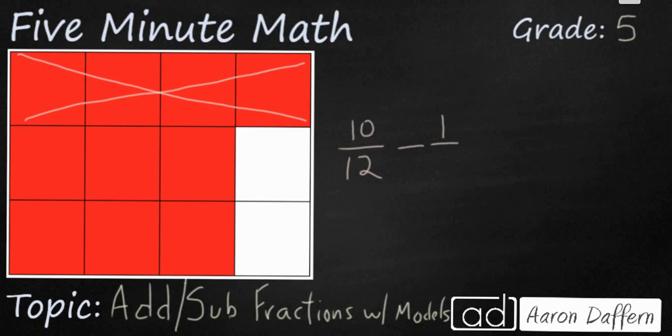Take a look at our rows. This whole first row is X'd out and you have two additional rows right here and right here. So that subtraction problem is going to be 10 twelfths minus one-third because one of the three rows is X'd out. So that is a visual representation of our subtraction problem with different denominators.